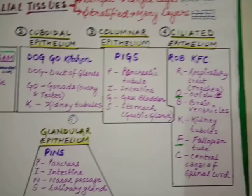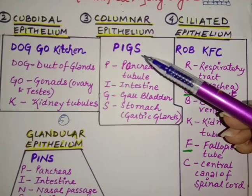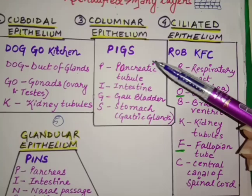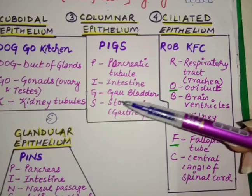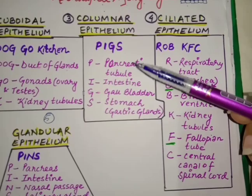For columnar epithelium, just remember 'PIGS.' P stands for pancreatic tubule, I for intestine, G for gallbladder, and S for stomach — which contains gastric glands. So PIGS gives you all the locations of columnar epithelium.